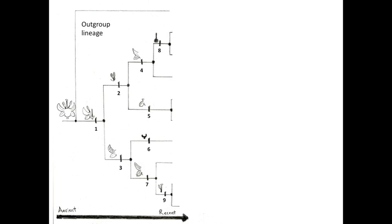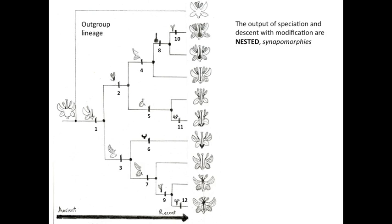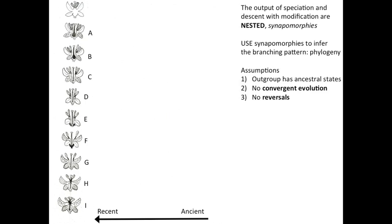Evolution continues and populations split, creating more lineages that evolve independently. We now arrive at the present and see that evolution has created ten species with similarities and differences. Importantly, an output of evolution are these nested synapomorphies. Of course we do not know the past relationships between these lineages; however, we do know that evolution creates nested synapomorphies, and that these synapomorphies infer common ancestors and the branching pattern — the evolutionary history or phylogeny.